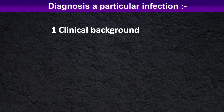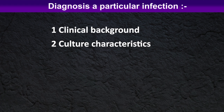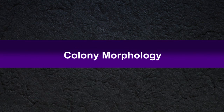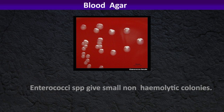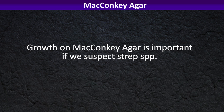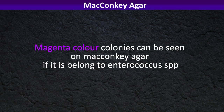When going for diagnosis, we look at clinical background, culture characteristics, then microscopic, biochemical, and serological tests. On blood agar, Enterococci species give small non-hemolytic colonies, but they may also be alpha or beta hemolytic, and colonies are larger than other streptococci colonies. On MacConkey agar, magenta-colored colonies can be seen if the organism belongs to Enterococci species.